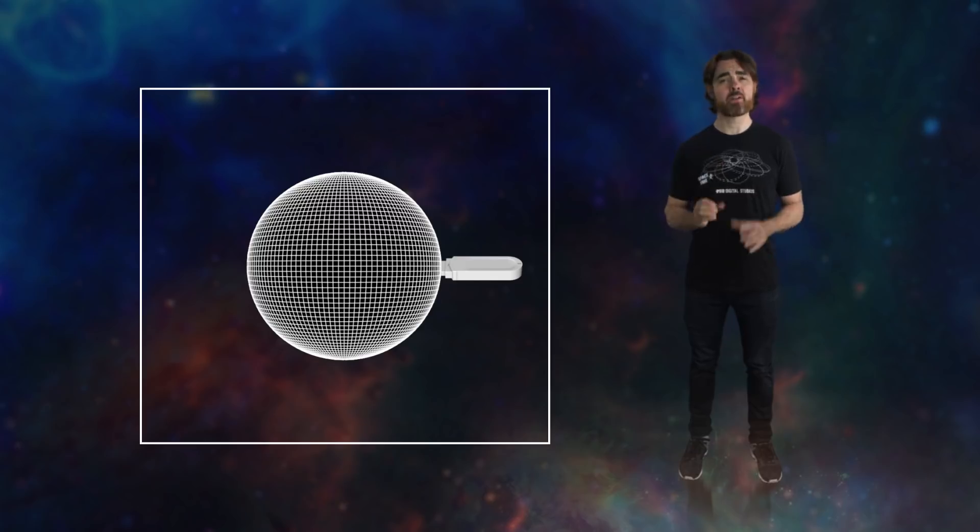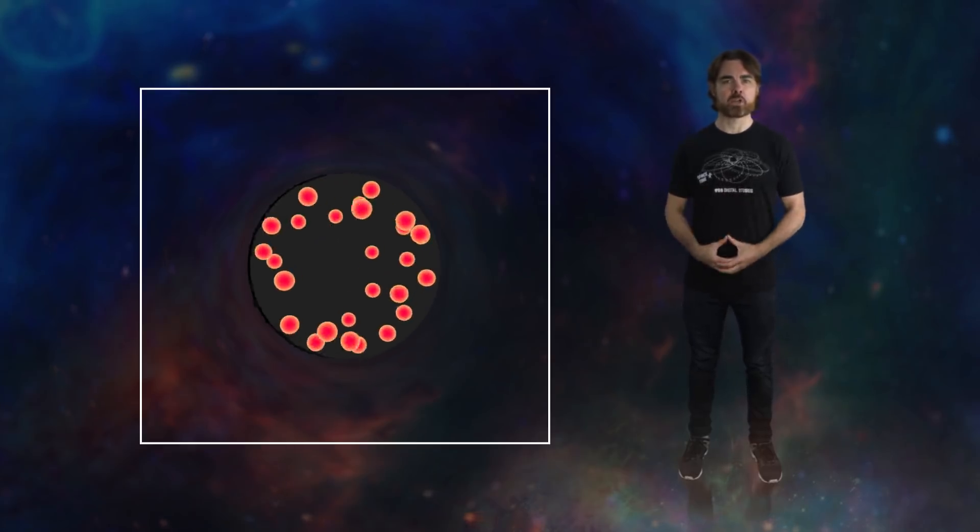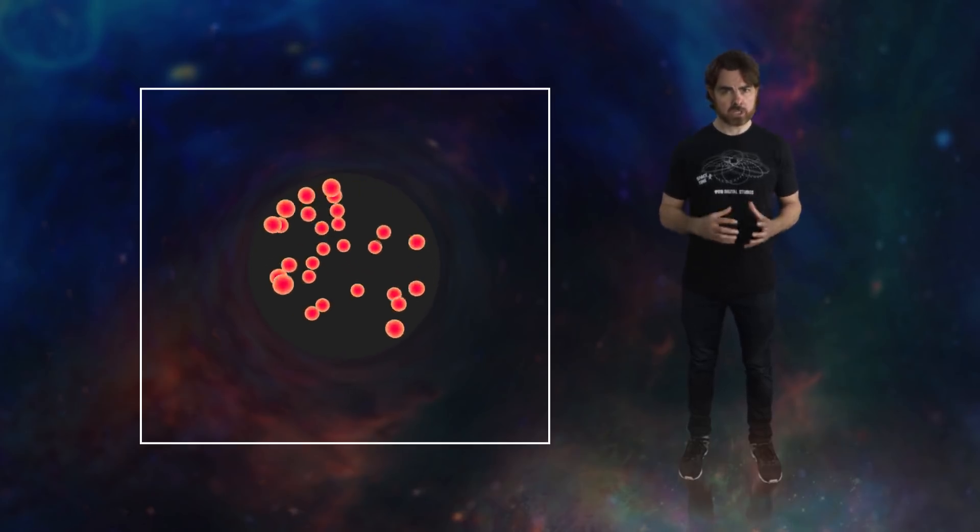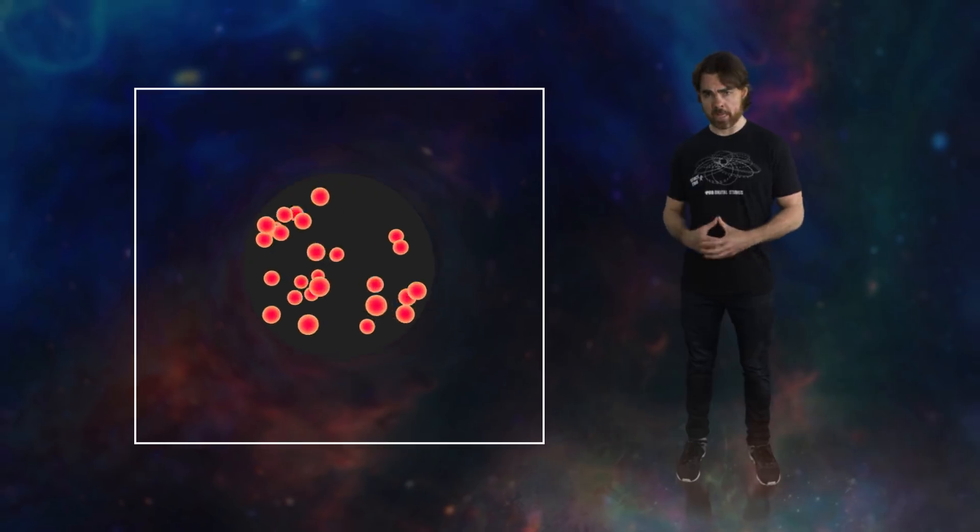Bizarrely, the Bekenstein bound suggests that we could hold all of the information in the observable universe within a storage device smaller than the observable universe. Which brings us to the first part of the challenge question. Assuming you can build a computer that stores information at the Bekenstein bound, essentially your memory device is the event horizon of a black hole. How large would that black hole need to be to store all of the information about all of the particles in the universe?